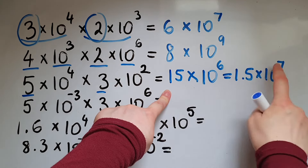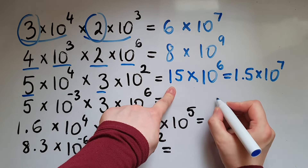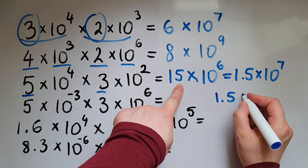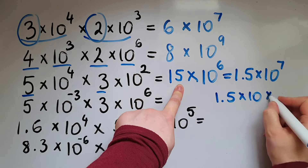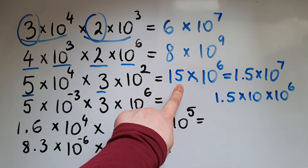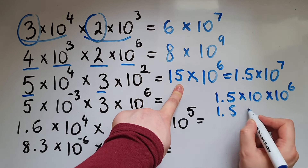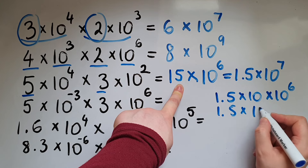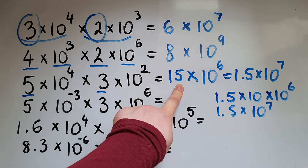Why did I add one more in there? Because 15 times 10 to the power of 6, you can write as 1.5 times 10, and then we're going to multiply this by 10 to the power of 6. So 1.5 is multiplied by 10 to the power of 6 and another 1, that is 7.